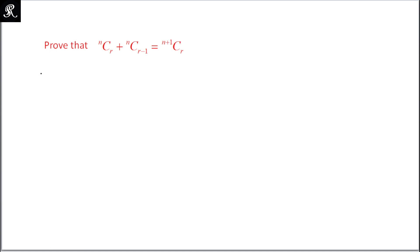Assalamu alaikum. Here we are given a few Pascal's triangle coefficients and we have to prove that the left hand side is equal to the right hand side. To prove that, first of all we need to know what we mean by nCr and nCr minus 1.